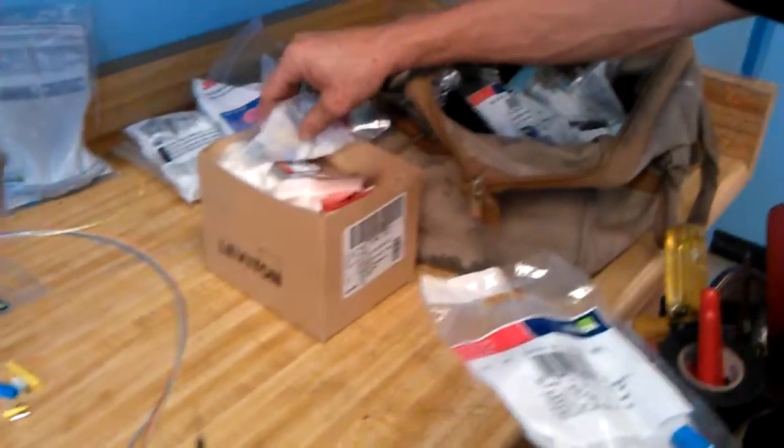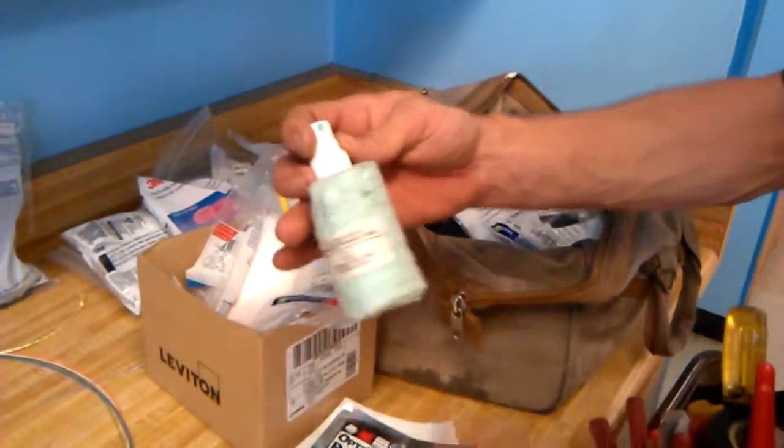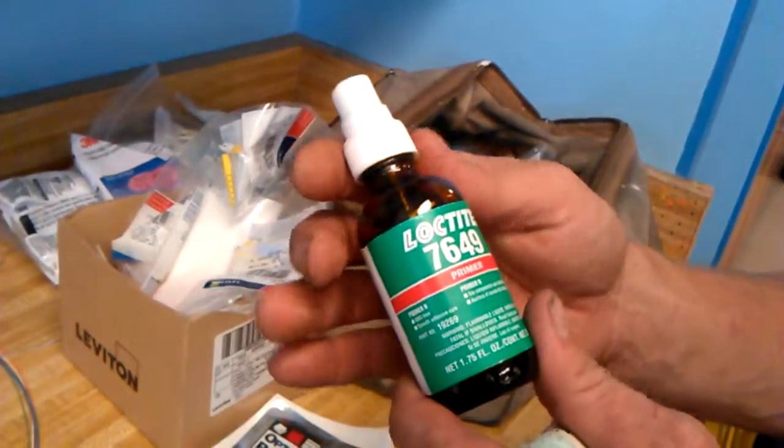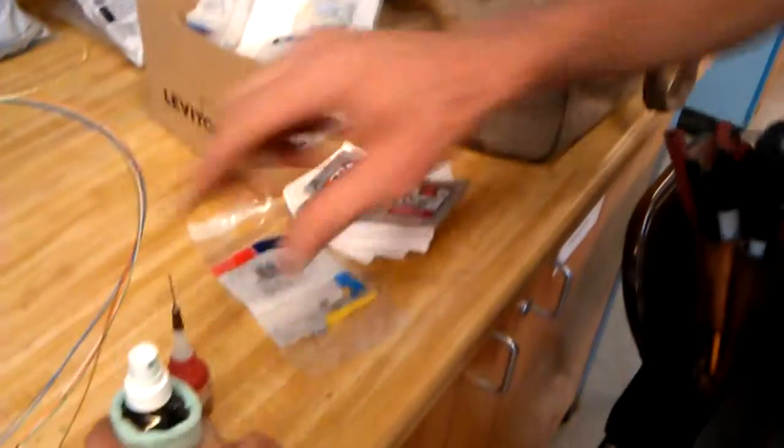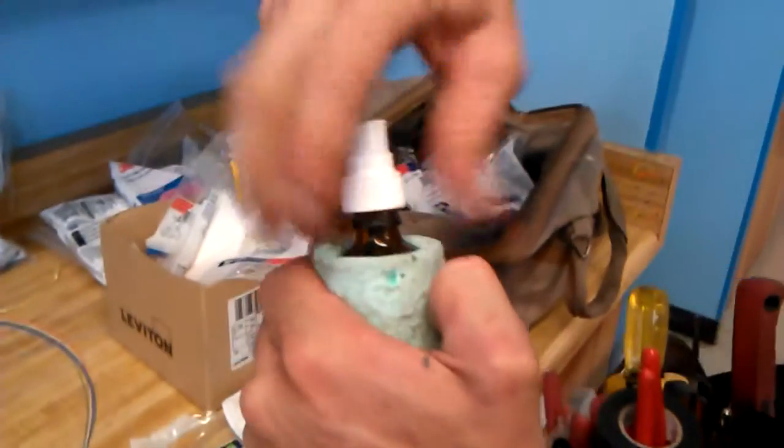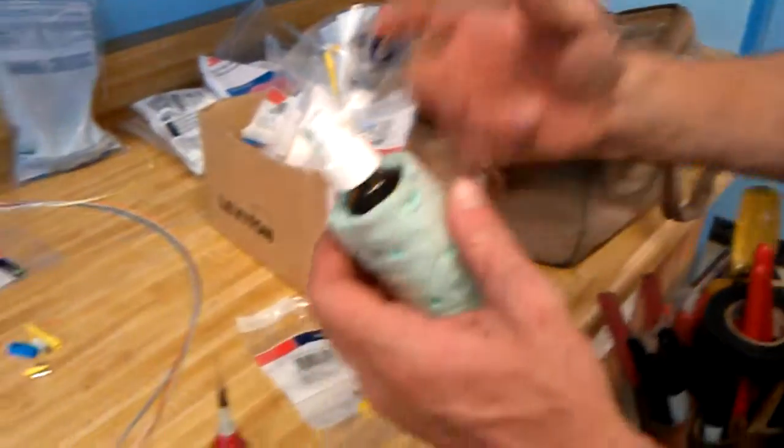And of course with that glue comes an accelerant or an accelerator, which is right here. This is also a Loctite product 7649, it's just a spray-on adhesive. You can either unscrew the lid and dip the strand in, or you can put the glue in the connector and then spray it on as I'll show you.